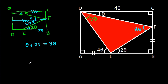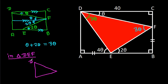Now in triangle DEF, these two angles are equal, both being 3 theta, so DE will be equal to EF.